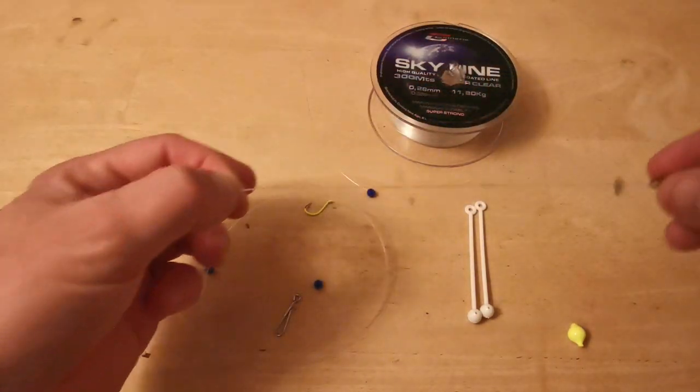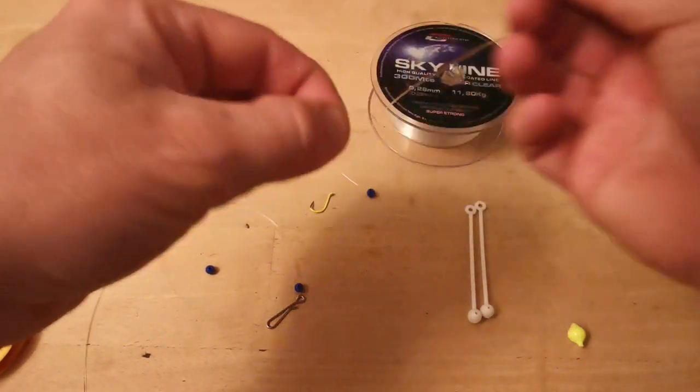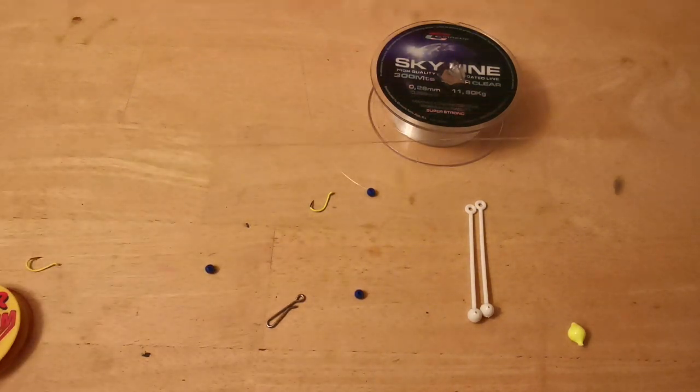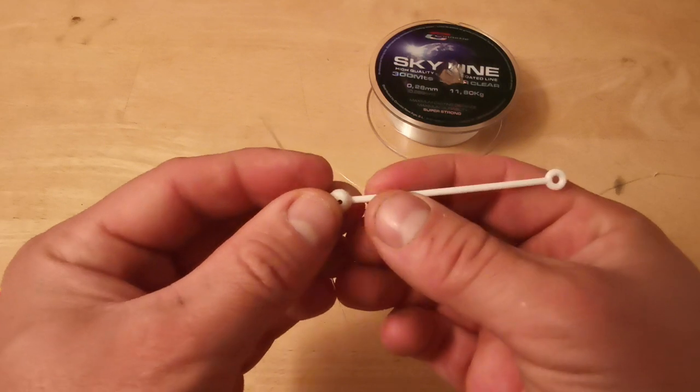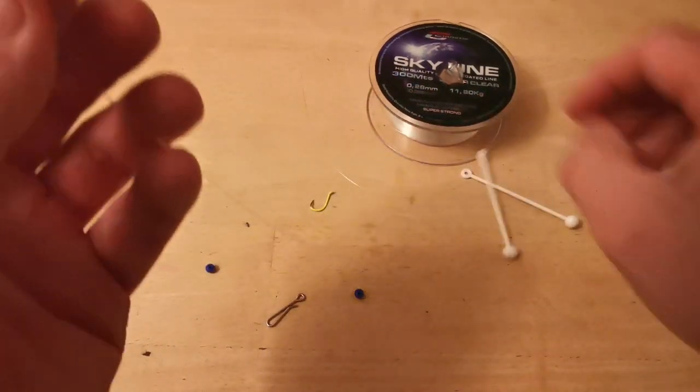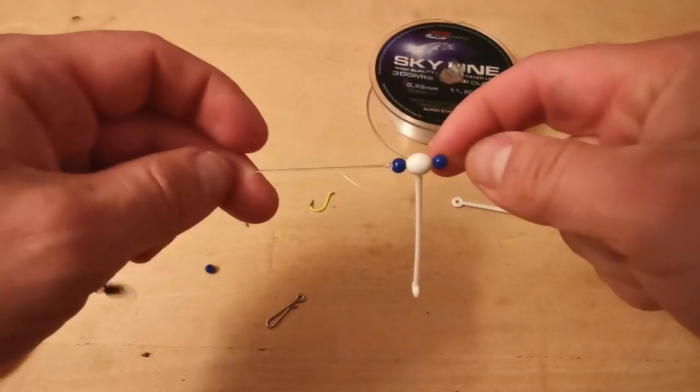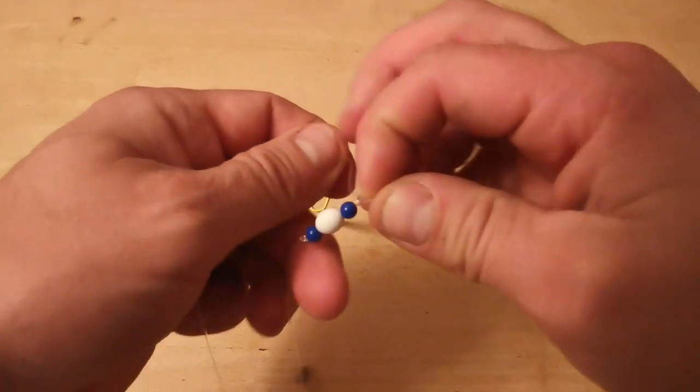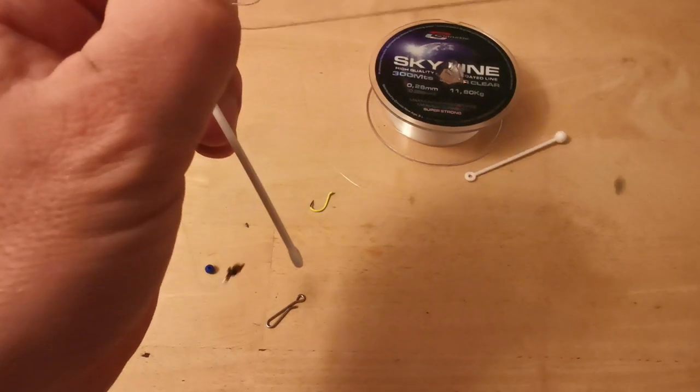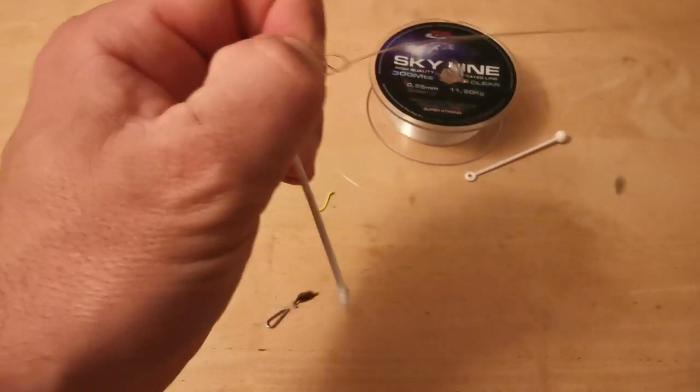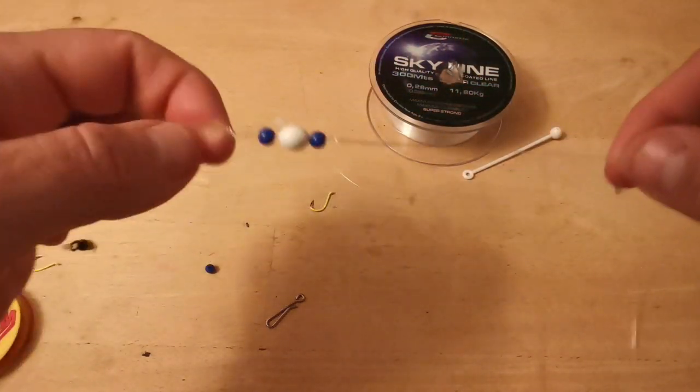Now I would go perhaps six inches down and do a figure of eight knot. From the bottom of the rig, or the open end of the line, we slide on a blue bead, slide an Avis boom through this oval section, then I'll slide on another blue bead. You then put another figure of eight knot on the other side of that boom.